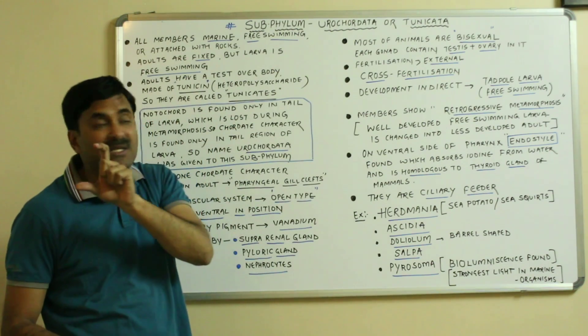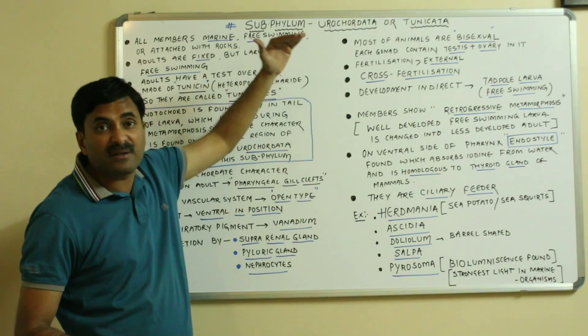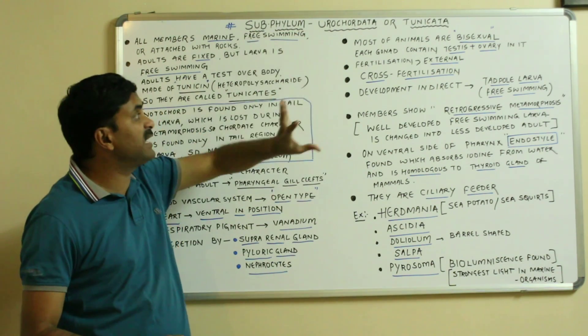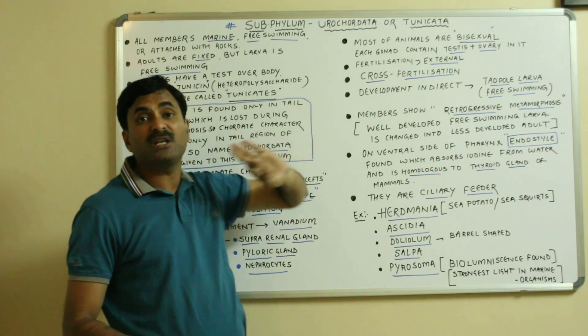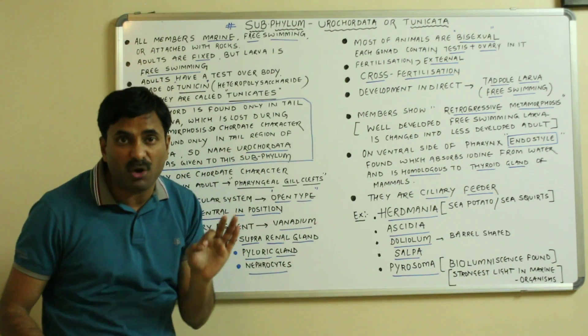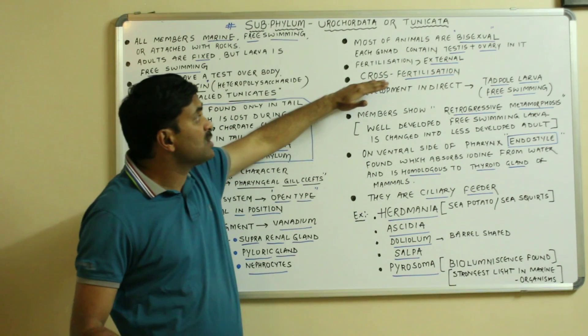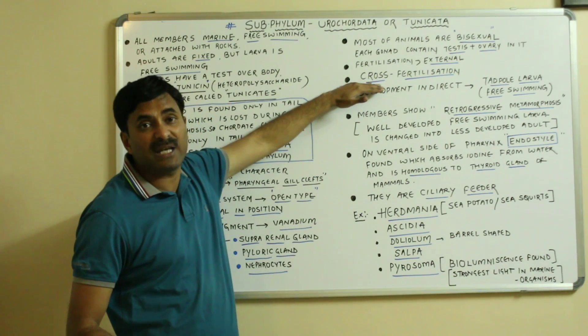You can also call it as ovotestes means each gonad is having testes as well as ovary. Fertilization in them is external means it occurs outside the body in water and generally they have cross fertilization.